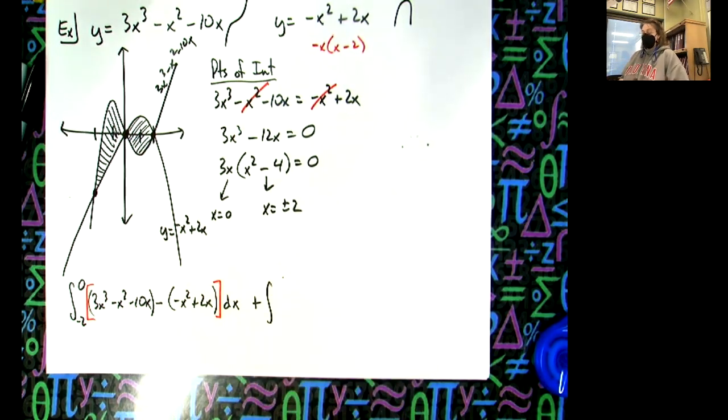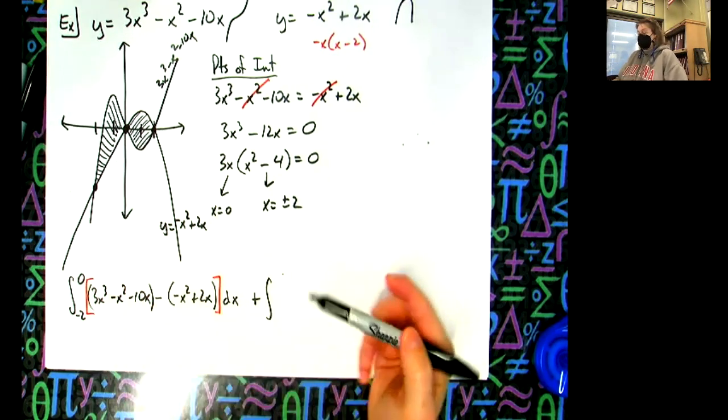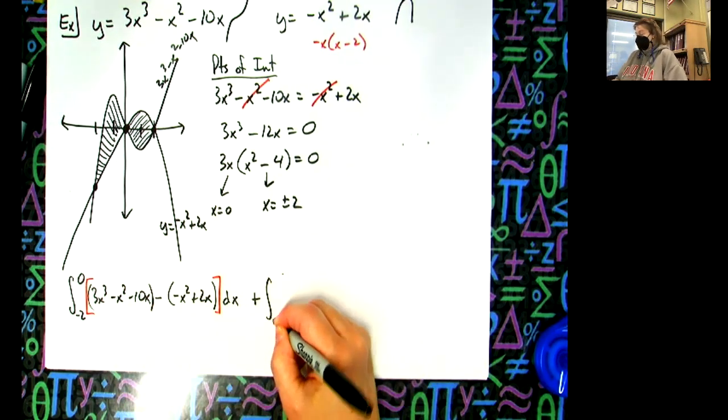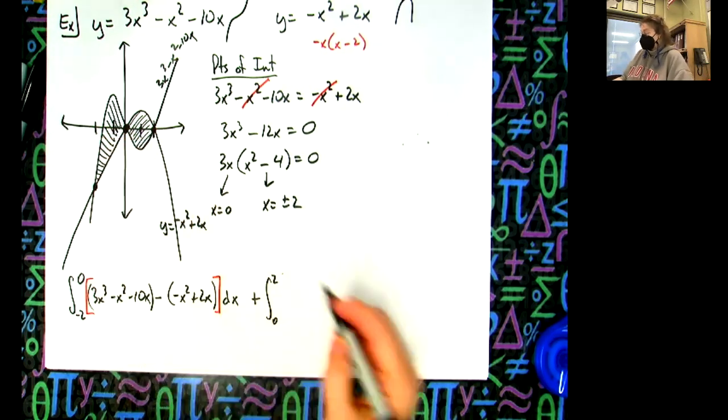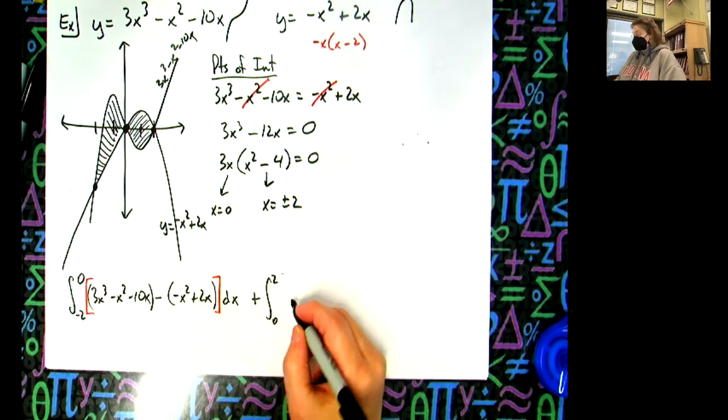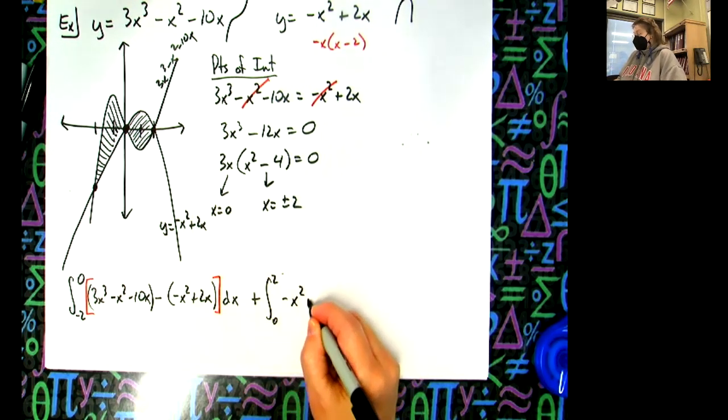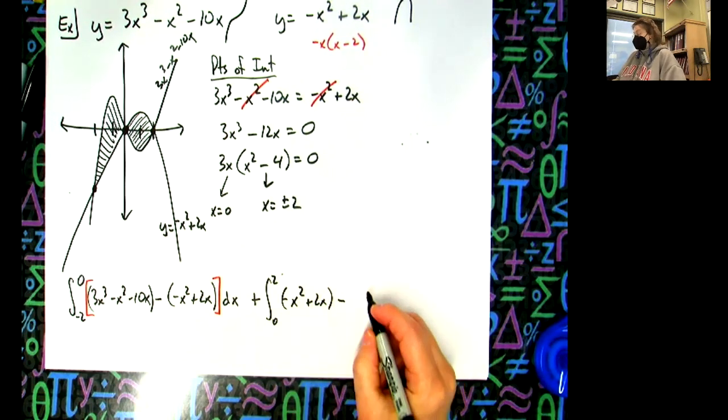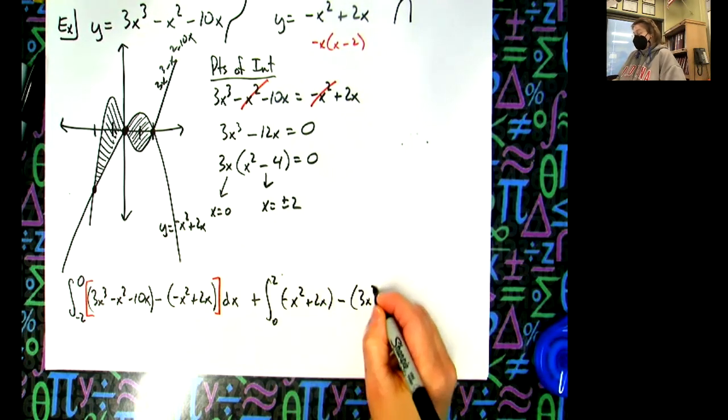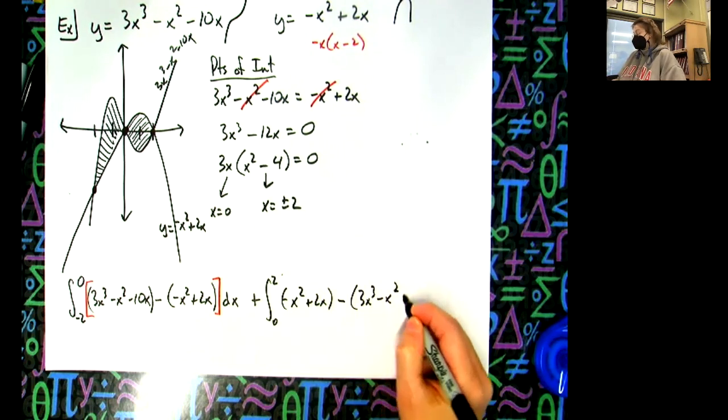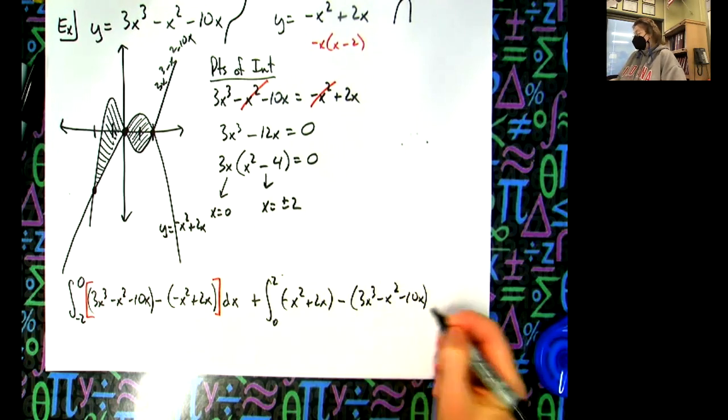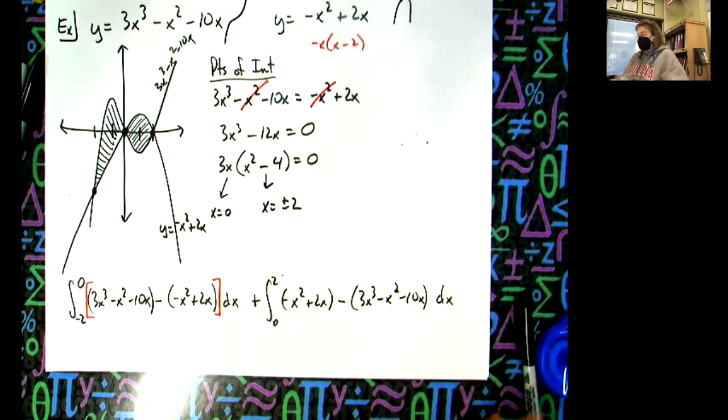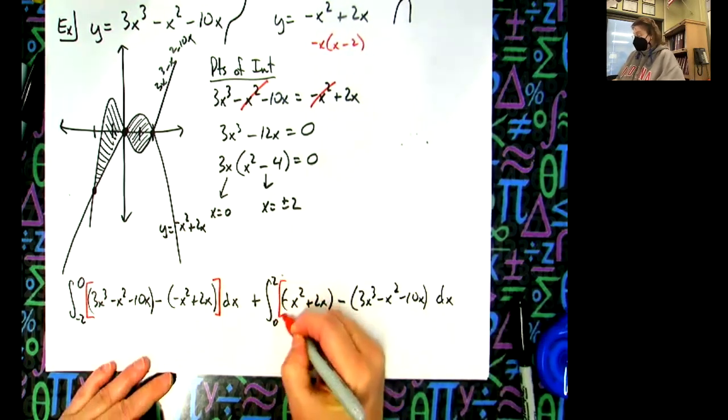And then we've got to add to that this other area over here. We're going to run it from 0 to 2. Top curve is -x² + 2x minus the bottom curve, 3x³ - x² - 10x, with our dx and square brackets.